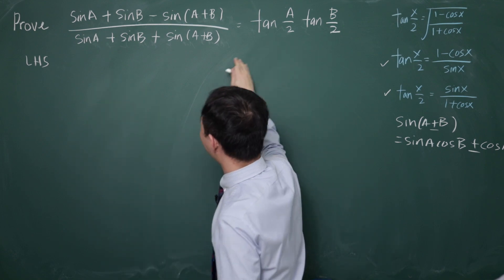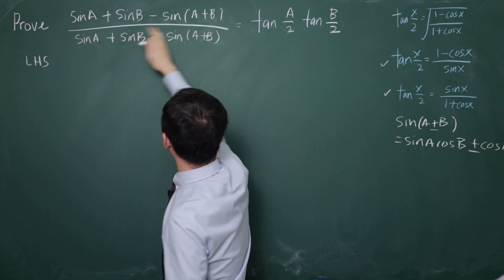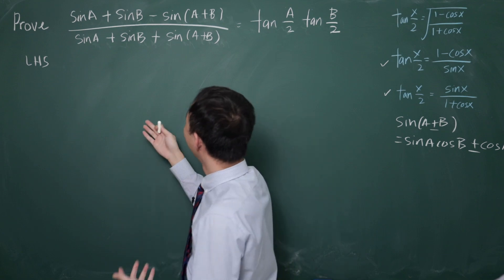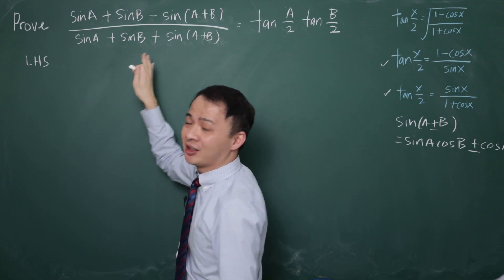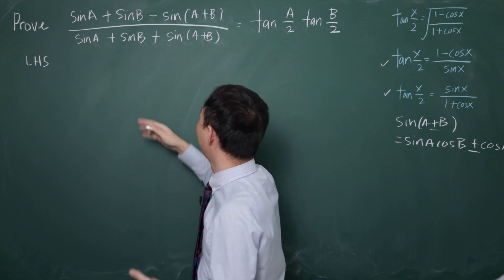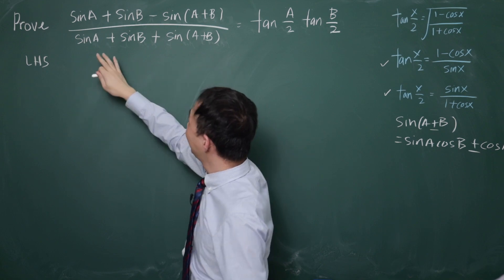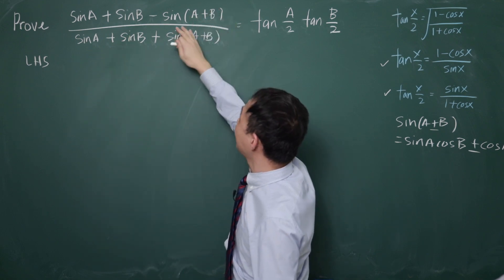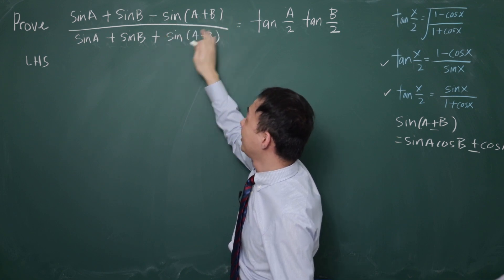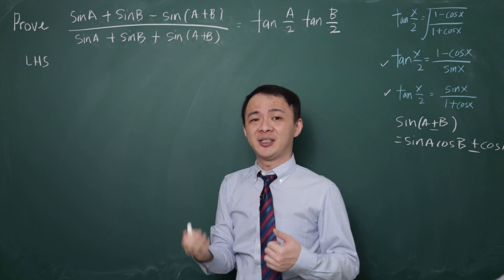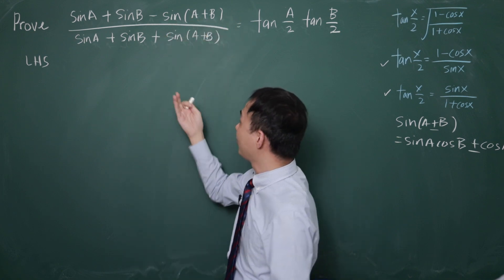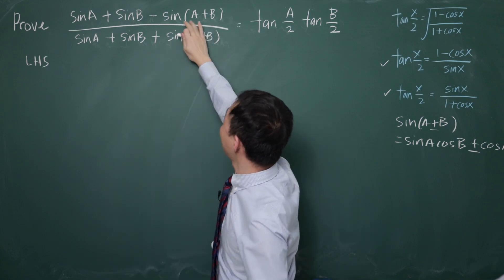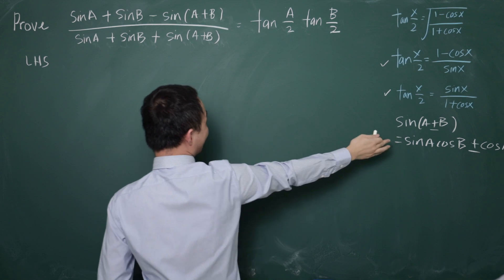Before changing anything to tangent, I want to look at this expression and see what I can do. Because the sine terms don't have a square here, I cannot use the Pythagorean identity to change them. So the only thing I can change in the expression is sin(A+B), which appears twice — once in the numerator and once in the denominator. This is the only thing I can change based on what I see, so I'm going to substitute sin(A+B) using the addition formula.